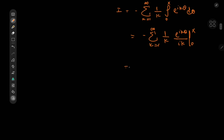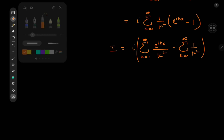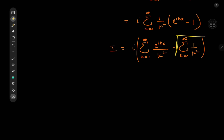Now 1 over i is negative i, so the negatives cancel and we have i times the sum over positive integers k of 1 over k² times (e^(ikx) − 1). Using linearity of the summation operator, this splits into i times the sum over k of e^(ikx) / k² minus the sum over k of 1/k². That second series is the zeta function evaluated at 2, which equals π²/6, but I'll leave it written as ζ(2) because that just looks really cool.